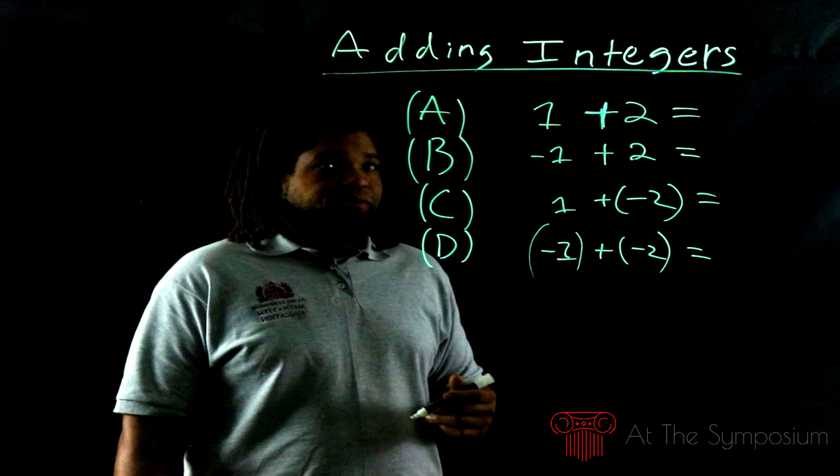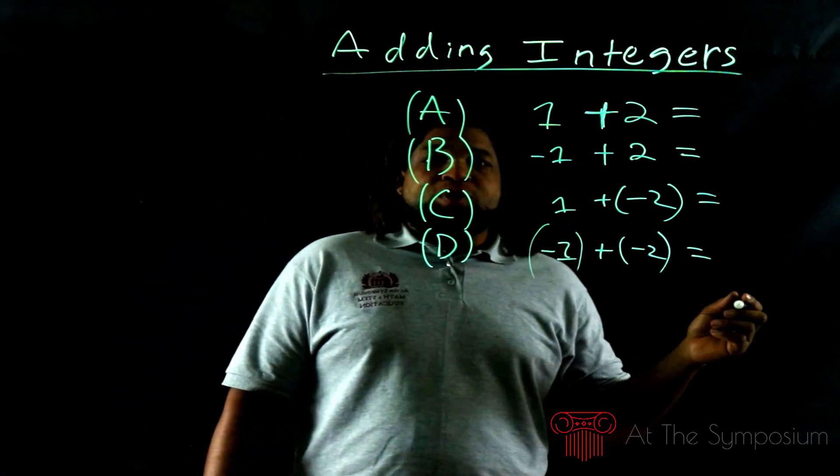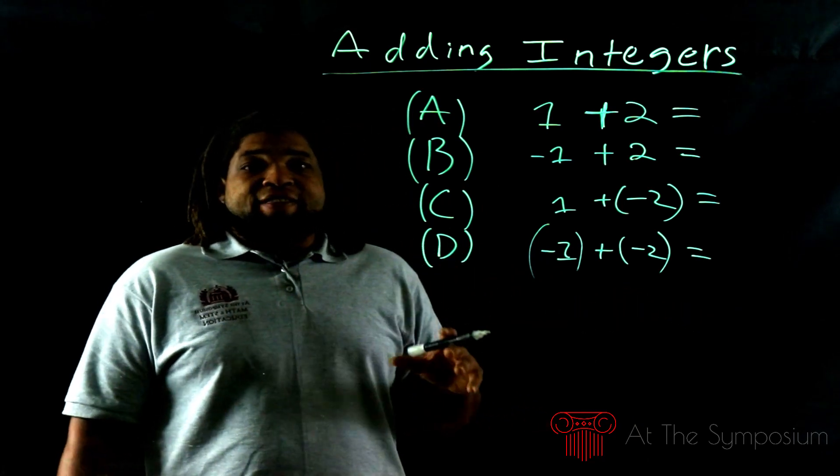So the first one's very simple. A, that's just 1 + 2. We're using very simple numbers because at this point,